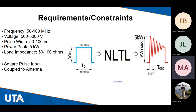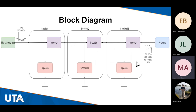From our sponsor Lockheed, we have received several requirements and constraints. They want the output to be somewhere in the range of 50 to 100 megahertz, which is achievable with the lumped model. The voltage input will come from another team also working with Lockheed, and we're expecting somewhere in the range of 500 up to 5,000 volts. With that wide a range, we are designing our project to handle any voltage within it, and the output will ultimately be coupled to an antenna.